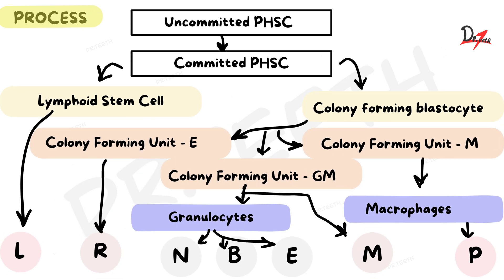Moving on to the process of erythropoiesis, we'll discuss it in two phases: first, how erythrocytes are formed from stem cells in the hematopoietic system, and next, the stages of development and maturity of RBCs. Each type of blood cell — whether WBC, RBC, or platelet — begins as a hematopoietic stem cell. These cells are called uncommitted pluripotent hematopoietic stem cells, or PHSCs, because they don't yet know what kind of cell they're going to become.